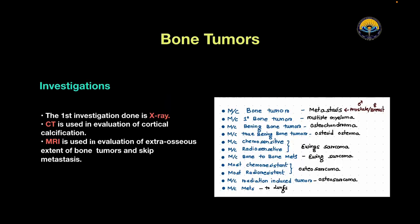Hey everyone, myself Dr. Amit, and today we will discuss bone tumors. There are a bewildering number of bone tumors with a wide variety of radiological appearances. The first line of investigation is X-ray only. CT is used in evaluation of cortical calcifications, and MRI can be used in evaluation of extra-osseous extent of bone tumors and skip metastasis.